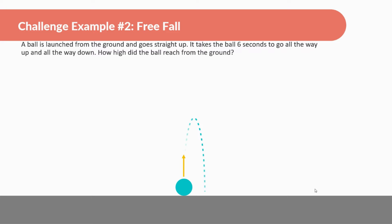A ball is launched from the ground and goes straight up. It takes the ball six seconds to go all the way up and all the way down. How high did the ball reach from the ground? Not much information — it gets thrown up, goes all the way up, all the way down, and takes a time of six seconds. Somehow we have to figure out how high it reached from the ground. It seems like we don't know much, but let's look for other pieces of information.